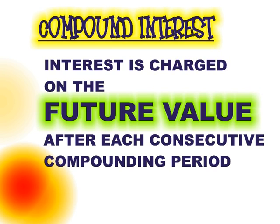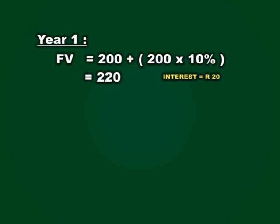Now let us take a closer look at compound interest. Compound interest is slightly different from simple interest, in that with compound interest, our interest is not charged only on our present value, but rather on the value of our money after each consecutive compounding period. Let us look at that example used for simple interest, except let's imagine we lent out the money at 10% per annum compounded once a year. At the end of the first year, your friend would owe you 220 Rand — 10% on the present value of 200 Rand.